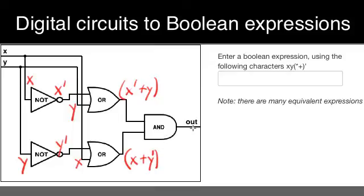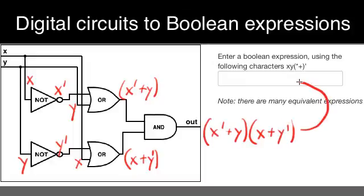And then the AND gate takes these two signals as its input, and so its output is going to be just the AND of those two expressions: x prime OR y, ANDed with x OR y prime, and that's the expression for the whole circuit.